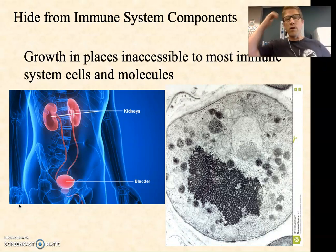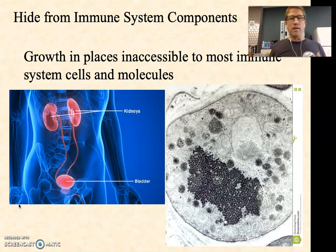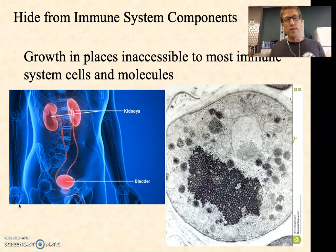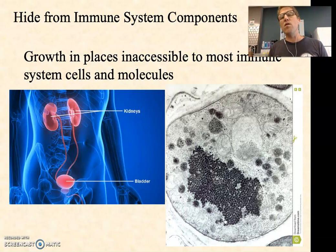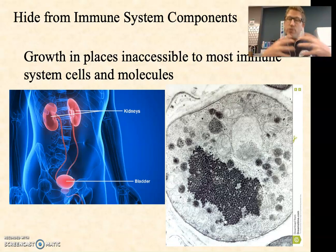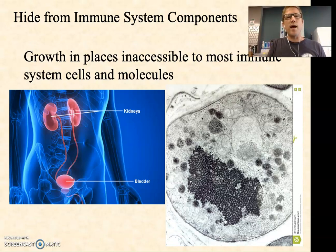Hiding from the immune system really comes down to growing in places that are inaccessible to most of the immune system cells and molecules. For example, in the lumen of glands, immune cells have a very hard time getting in. Inside the bladder, white blood cells and antibodies have a really tough time getting in. Or growing inside live cells — viruses always grow inside human cells and are always hiding except when they lyse the cell open. Many bacteria are intracellular pathogens that grow inside cells, and during that time they're hidden from the immune system.